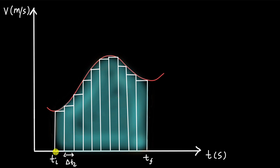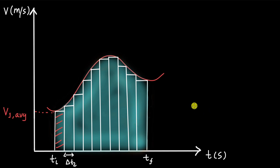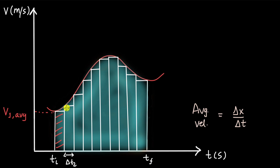The width for each rectangle is delta T one, delta T two, delta T three, and so on. For the first rectangle, the width is delta T one and the height is V one average, because we are figuring out the velocity over a finite time interval delta T one. Average velocity is given by delta X divided by delta T, so for delta T one you get V one average, for delta T two you get V two average, delta T three gives V three average, and so on till delta T ten.